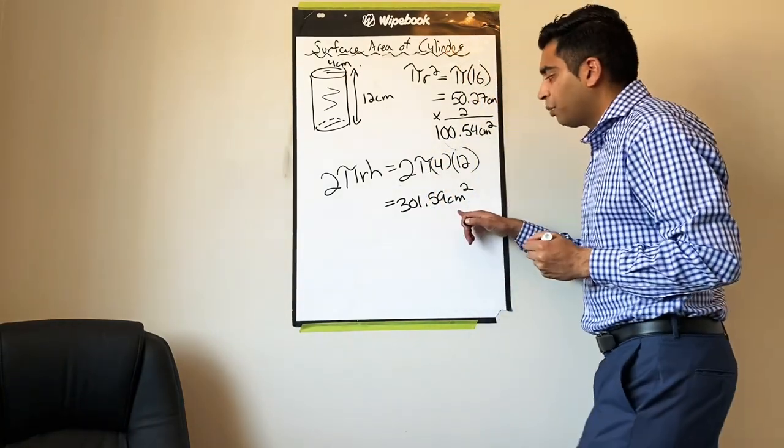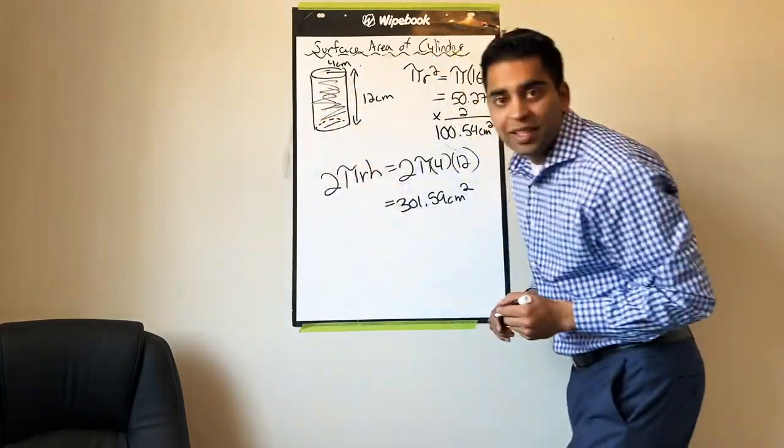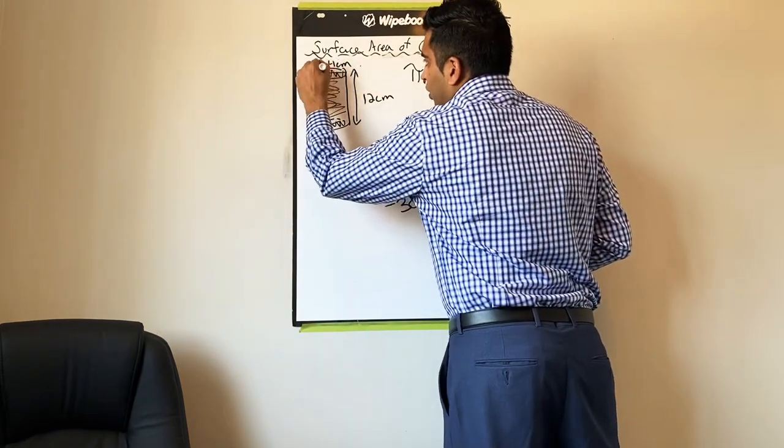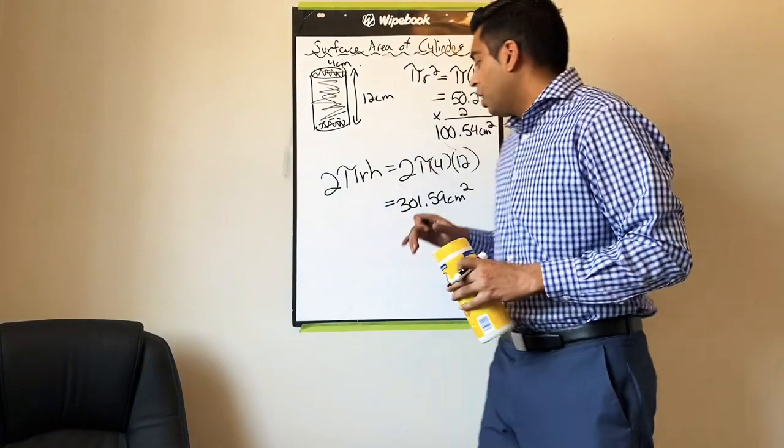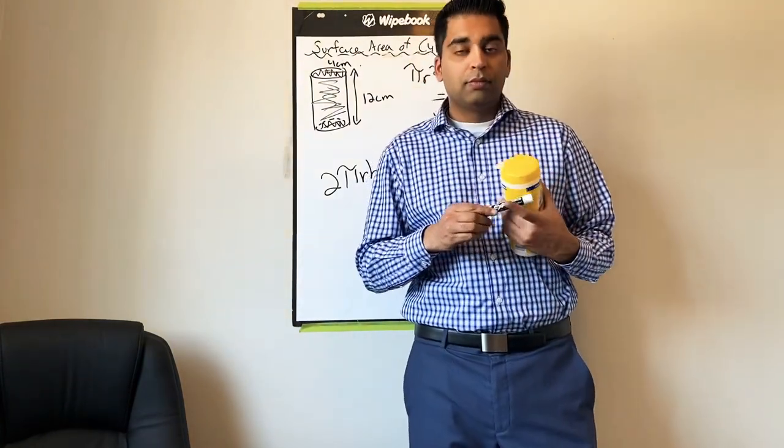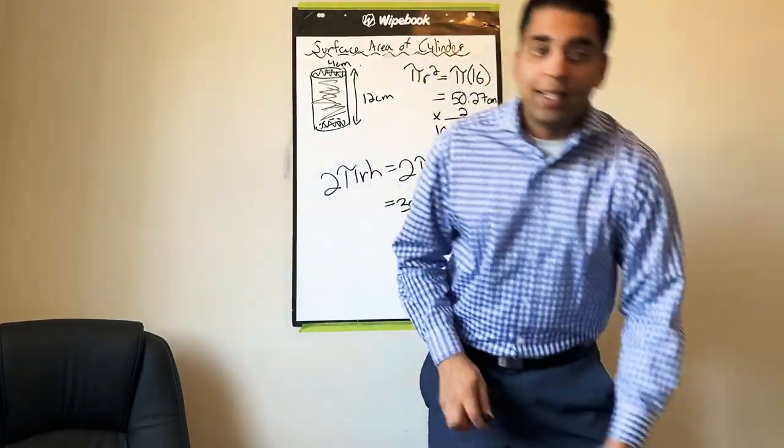So if this number relates to the middle body of the cylinder, and this number relates to the bottom circle and the top circle, and we want the entire surface area of the cylinder, what do you think I would do with this number and this number? That's right, I'm going to add those two numbers together.